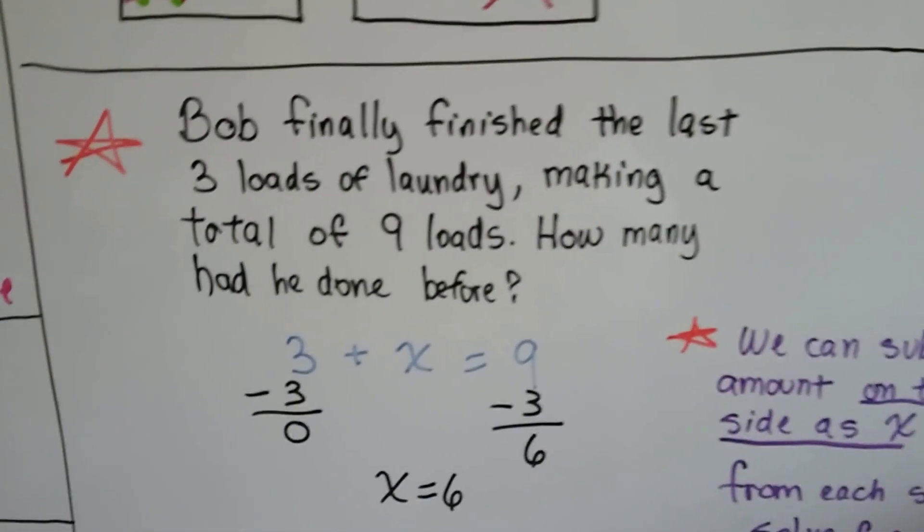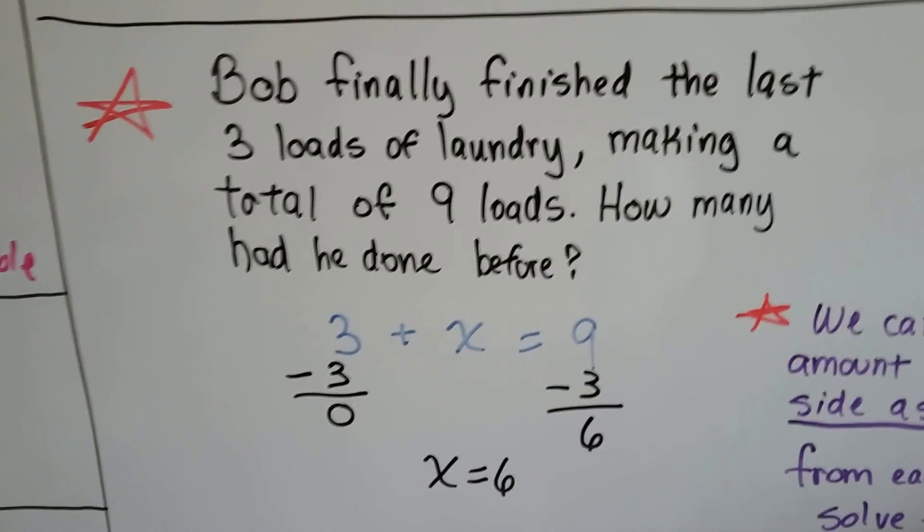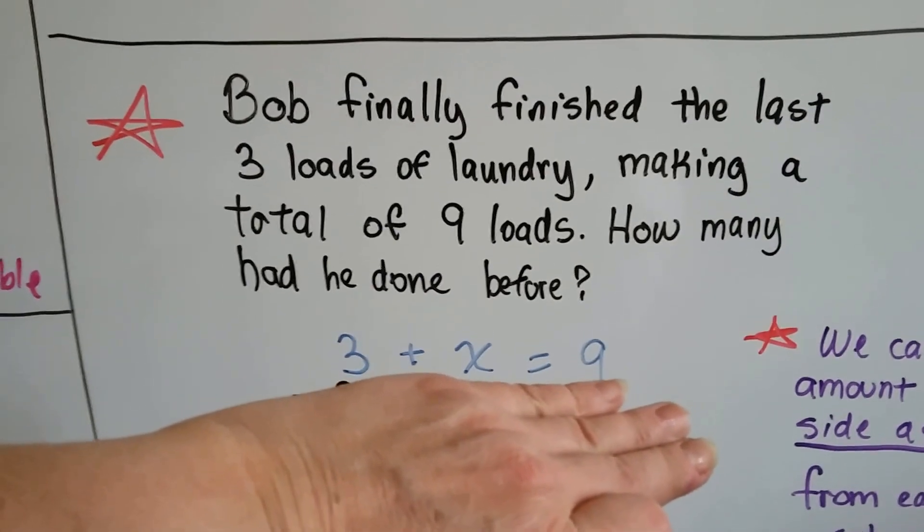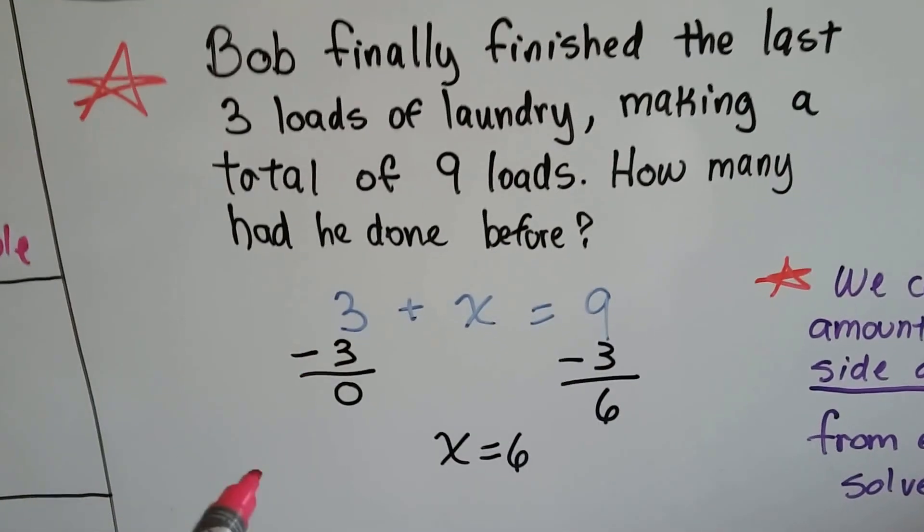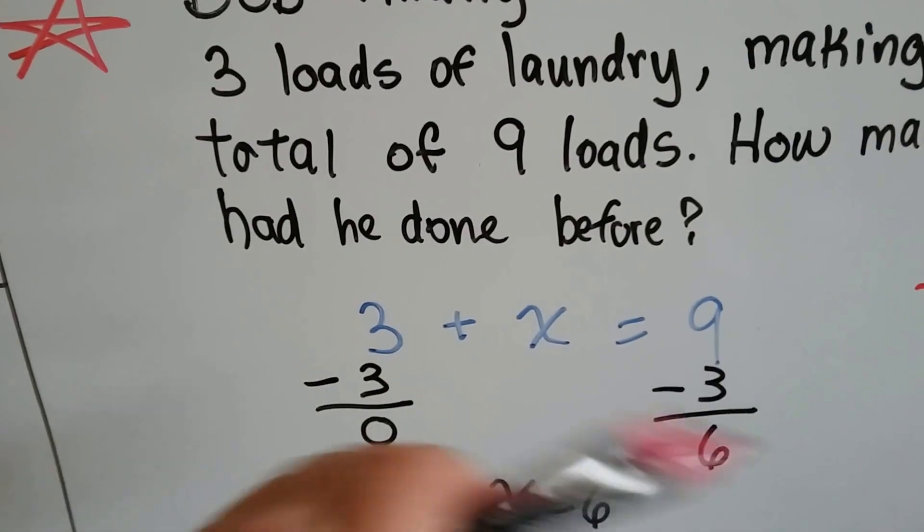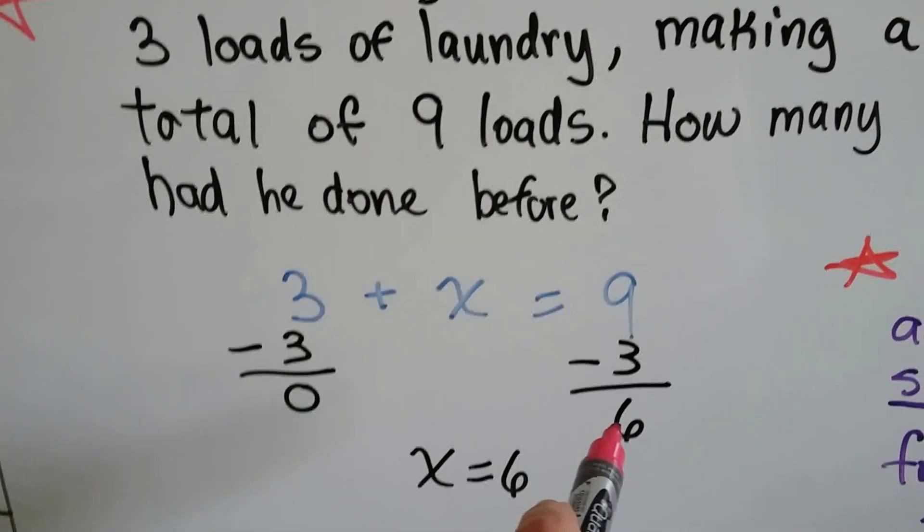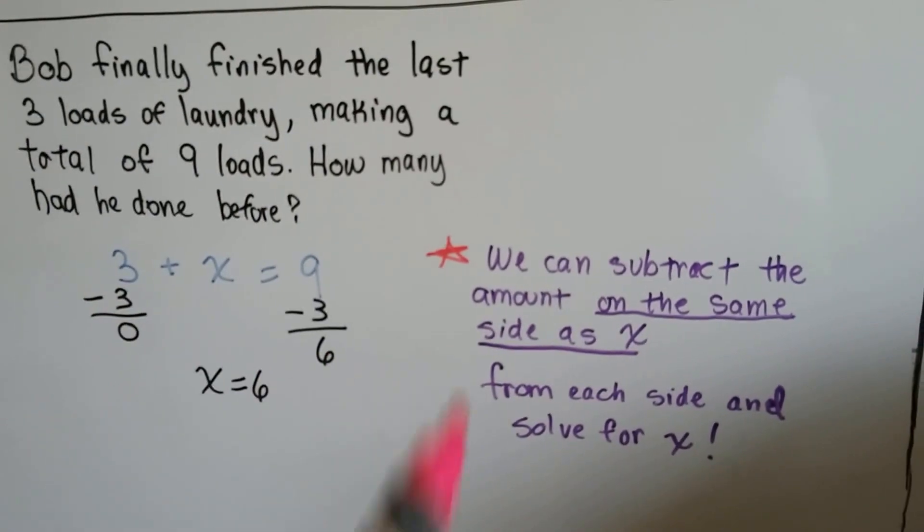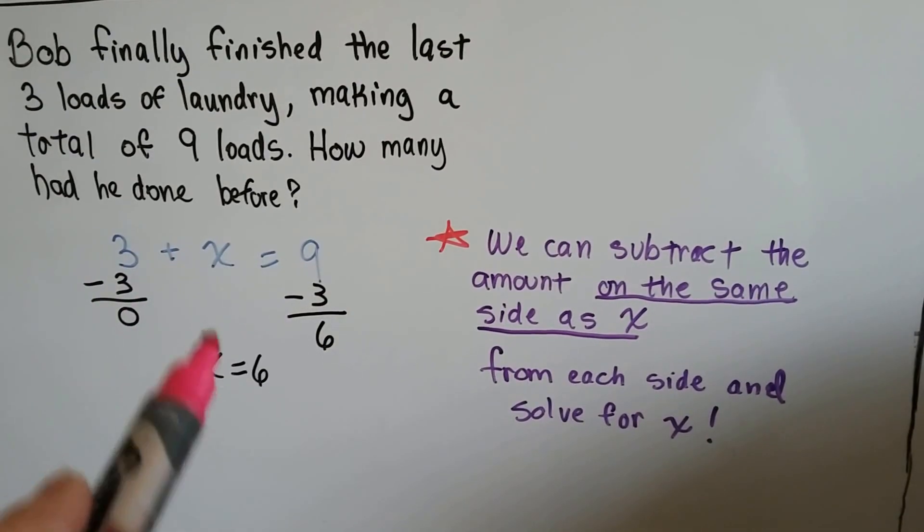Here's our last one. Bob finally finished the last 3 loads of laundry, making a total of 9 loads. How many had he done before? So we've got 3 plus x equals 9. So instead of doing our cute little dots and chips, what we do is we just subtract the 3. Because now we understand that we're isolating the x to one side of the equal sign. So if it says 3 plus x, we subtract 3 from this side and get 0, subtract 3 from this side and get 6, and we know that x equals 6. So when we're adding and trying to solve for x, we can subtract the amount on the same side as x from each side and that'll solve for x.